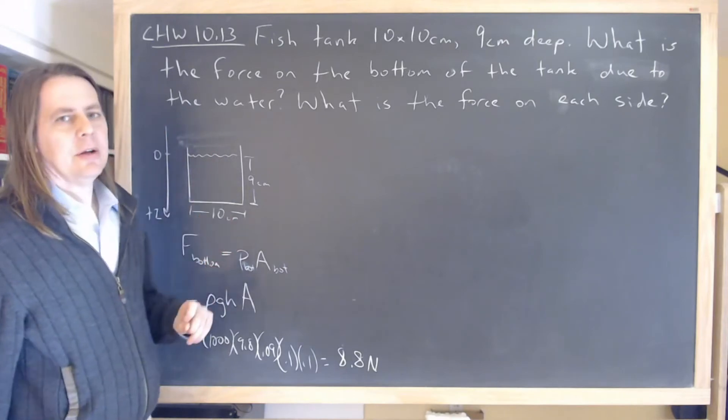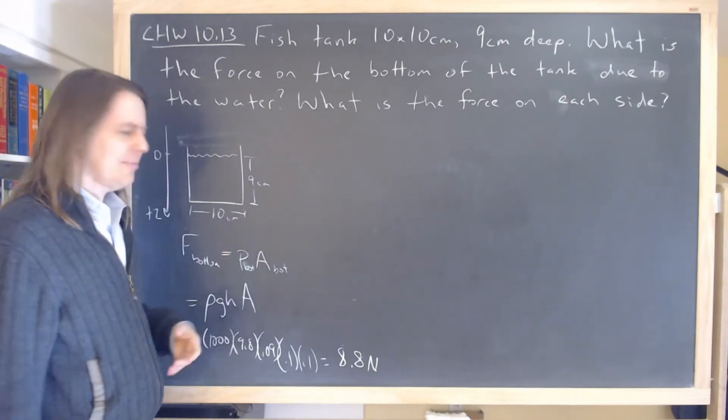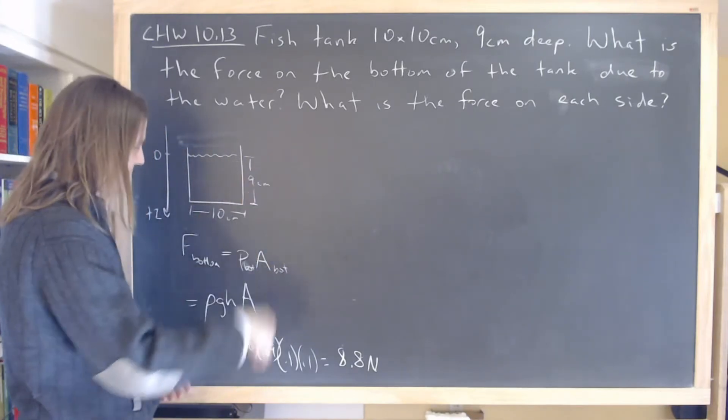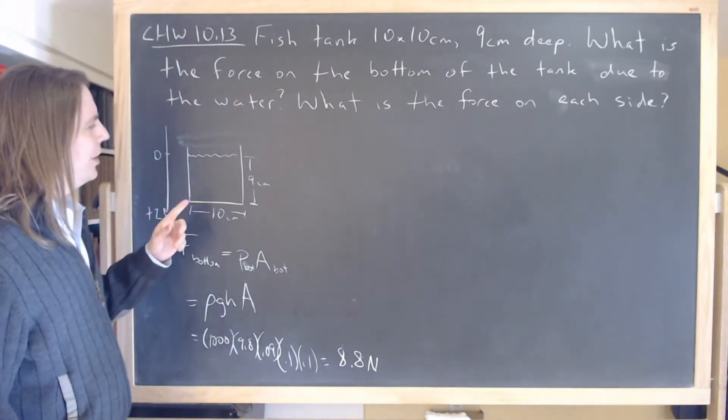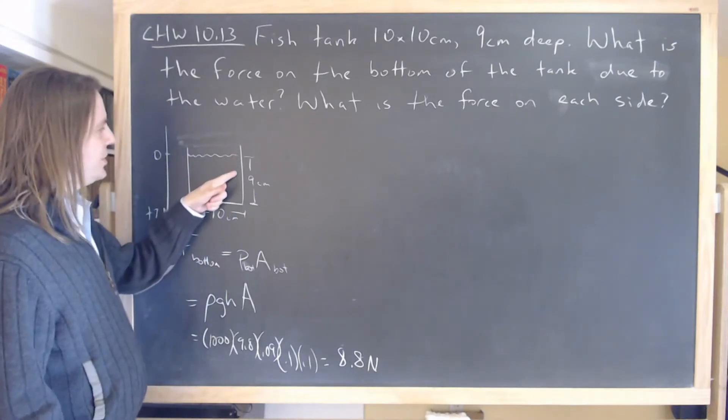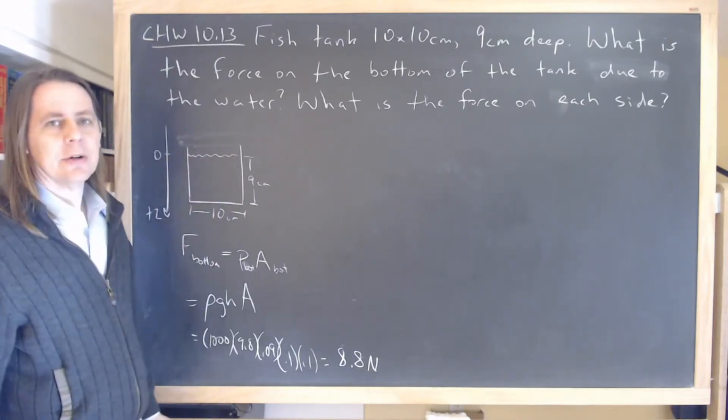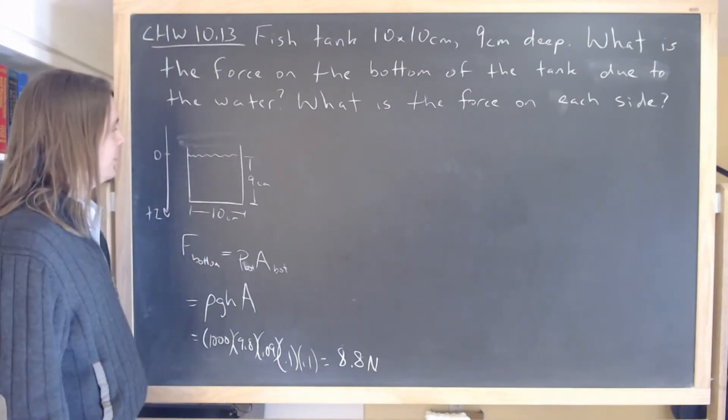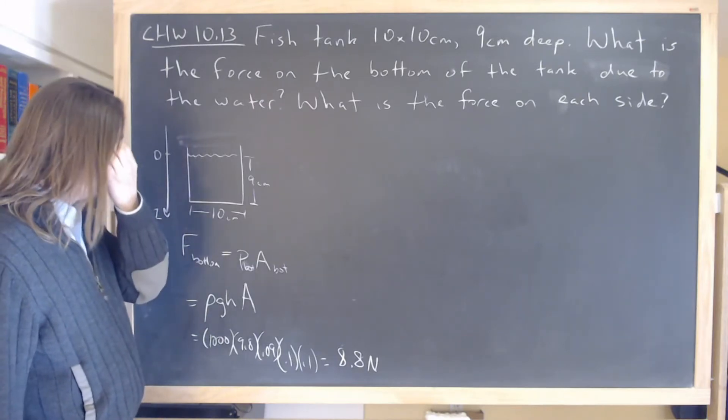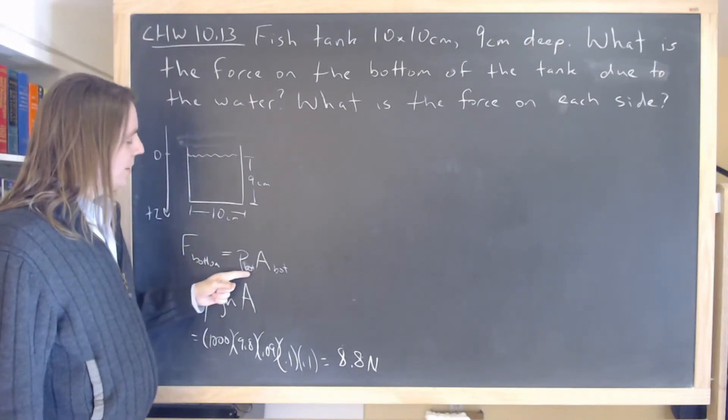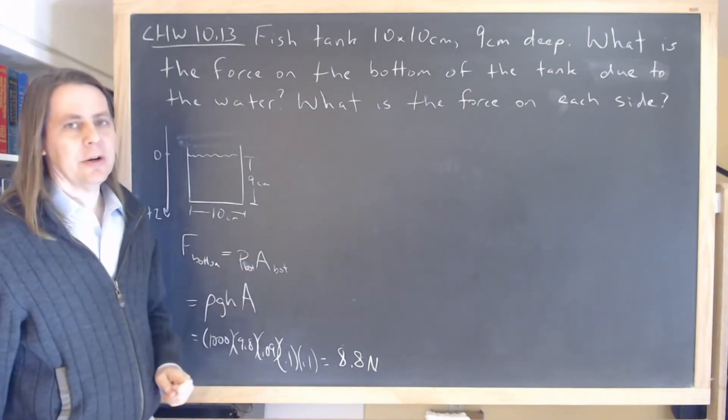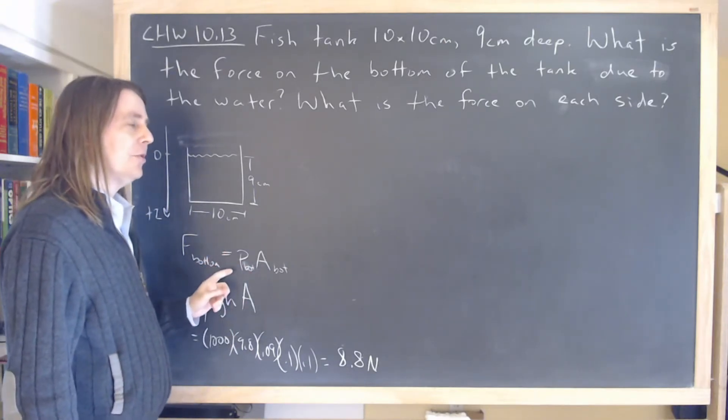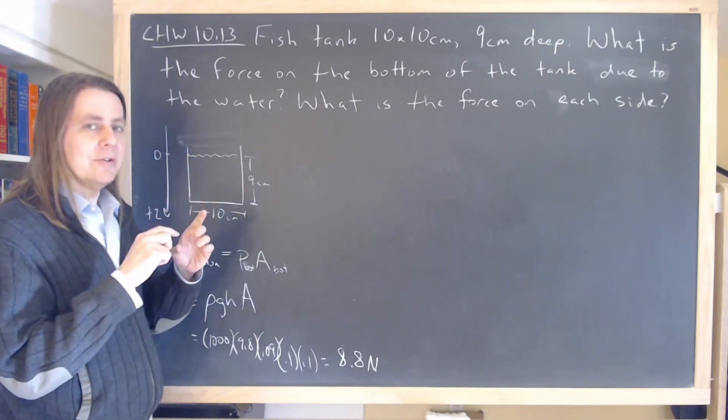What about the force on the side? So you'd say, well, I'll just do the same thing, right? It's 9 by 10 and I just got to get the pressure. And then what you need to realize, what makes this a calculus problem, is the pressure is changing as we go down the side here. Ah, yes. The pressure changes. The pressure isn't constant. So in this simple equation, force is pressure times area, that's assuming the pressure is constant over the area. If the pressure is not constant over the area, you have to break the area up into little pieces.